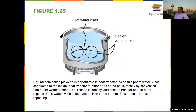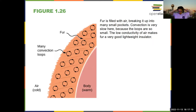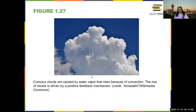Convection currents arise anytime you're heating something and have fluid out of equilibrium — they tend to move stuff around until it reaches equilibrium. Fur of all sorts is also a form of insulation: it traps air so it's hard for air to move from one side to the other, meaning things don't heat up or cool down as rapidly. Clouds are also caused by water vapor rising through convection.